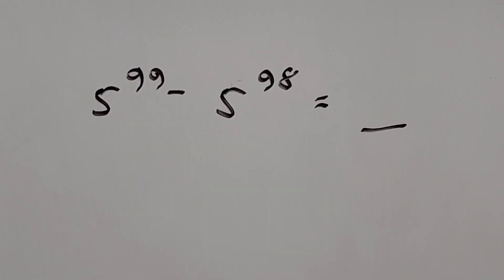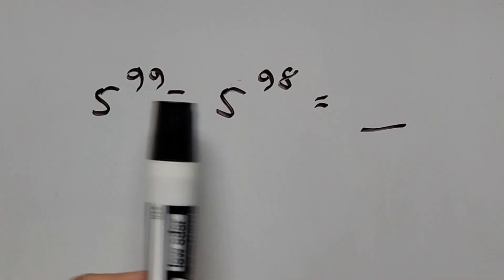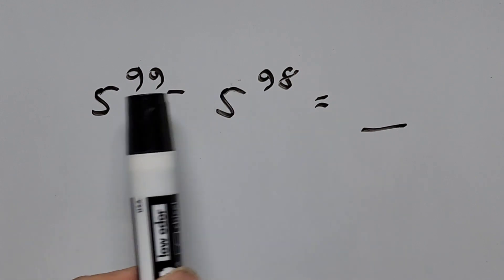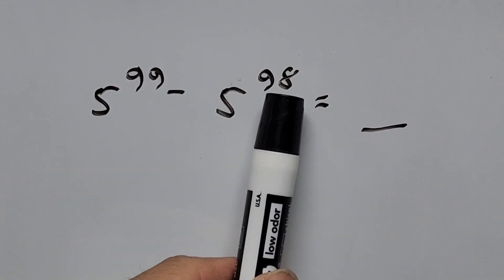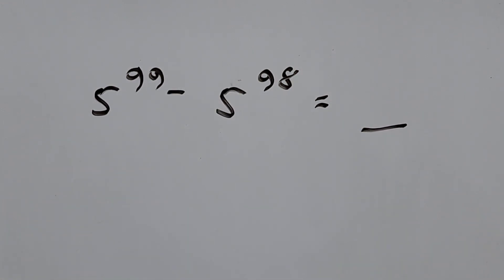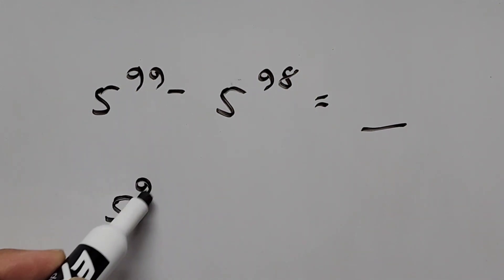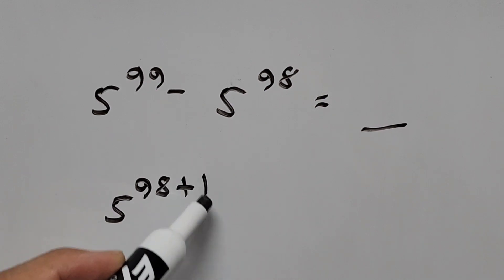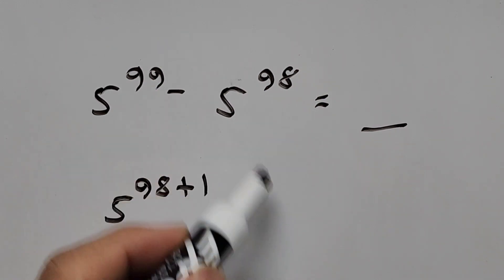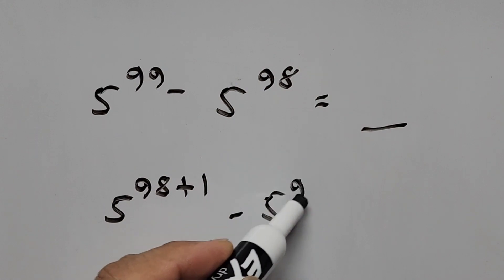What I'm going to do here is express 99 in terms of 98. The exponent 99 expressed in terms of 98. So this is 5 to the power of 98 plus 1, then minus 5 to the power of 98.